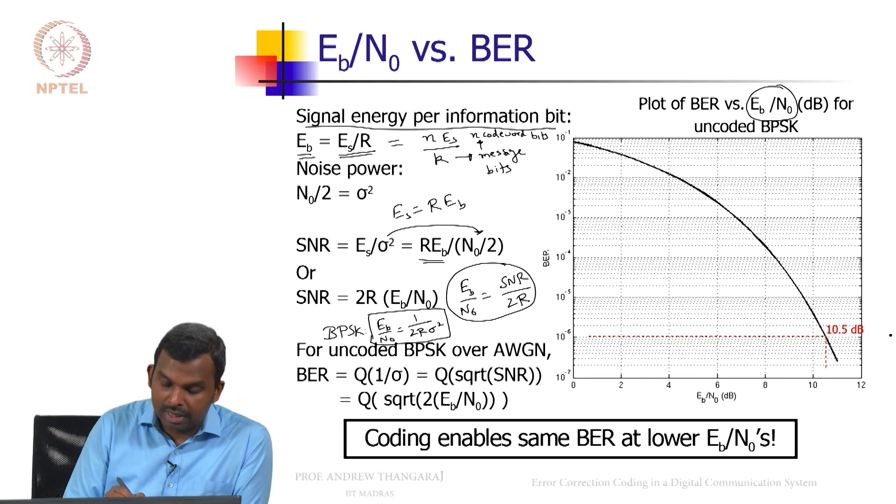So that can convert your BER versus SNR formula into Eb over N0, you will get an additional factor of 2. Because for uncoded, rate is 1. So your SNR is 2 times Eb over N0 and that is what you have here.